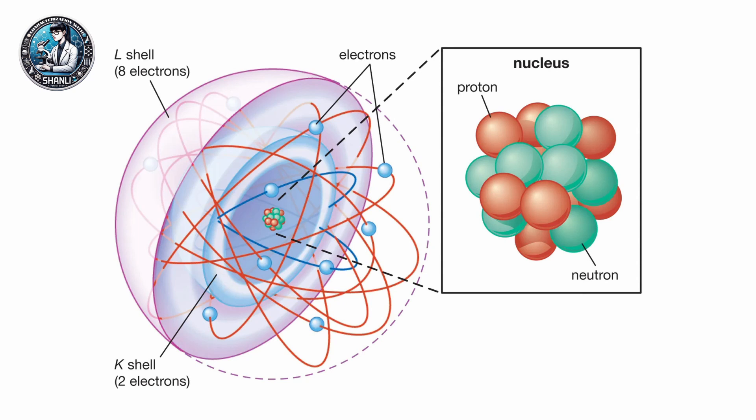These shells can hold a specific number of electrons, 2 in K, 8 in L and 18 in M and may include subshells. The energy of each electron depends on its shell and the element.